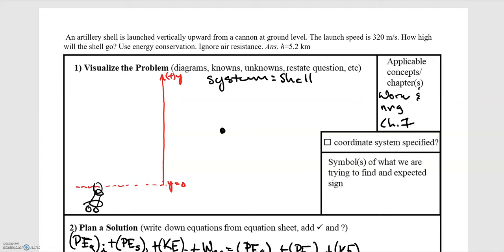In this video, we'll be going over the example of an artillery shell being shot upwards. We're told that the artillery shell is launched vertically upward from a cannon at ground level. The launch speed is 320 meters per second. How high will the shell go?